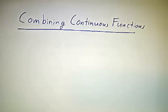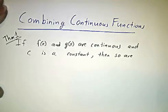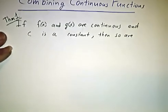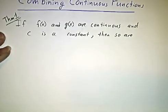So far we've talked about examples of continuous functions. Now we're going to talk about how to combine them to get other continuous functions. Let's suppose that f and g are continuous functions, they're continuous at a point a, and that c is a constant, and we're going to make a bunch of other functions that are continuous at a.